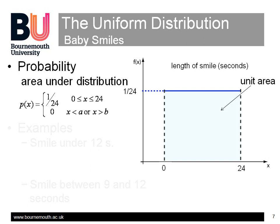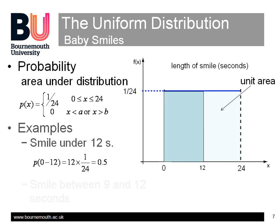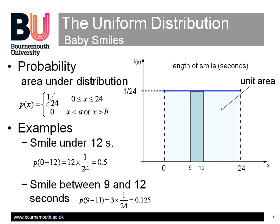If you want to predict the probability the smile will last for under 12 seconds, this will be the area between 0 and 12, or 12 times 1 over 24 equals 0.5. Similarly, the probability that the smile will last between 9 and 12 seconds is 3 times 1 over 24 equals 0.125, or a 1 in 8 chance.